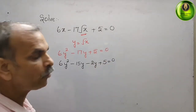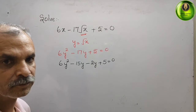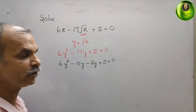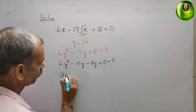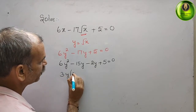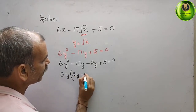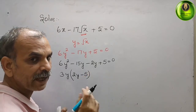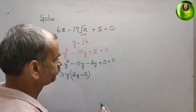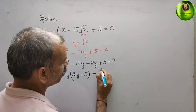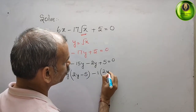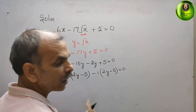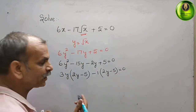Now we look for common factors. From the first two terms, 6y squared minus 15y, 3y is common, giving 3y(2y minus 5). From the last two terms, minus 2y plus 5, minus 1 is common, giving minus 1(2y minus 5). So the equation becomes (3y minus 1)(2y minus 5) equals 0.